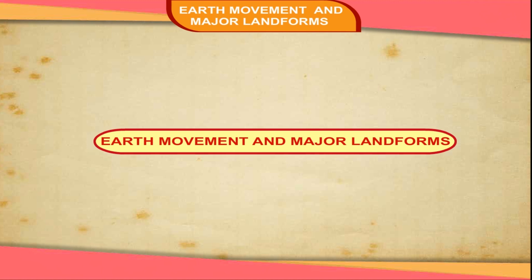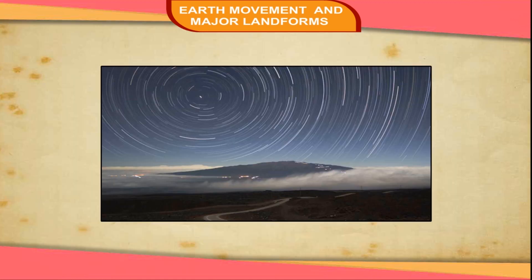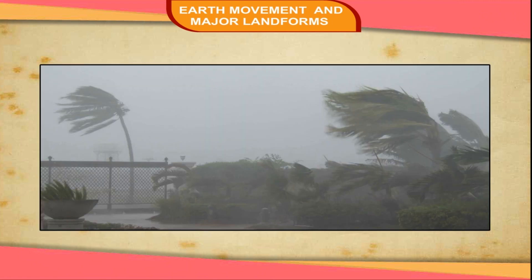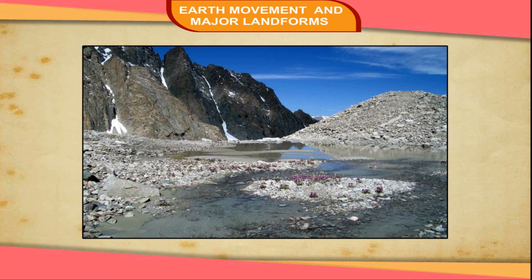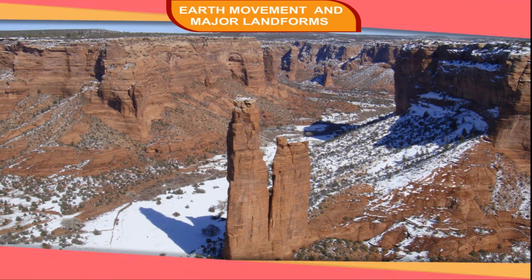Earth Movements and Major Landforms. The Earth's surface is highly uneven and irregular. The surface of the Earth is being shaped and reshaped by external agents like running water, wind, glaciers, etc. This is the reason why our present-day landforms are diverse and varied. What we see today on the surface of Earth is the product of millions of years of geological change.